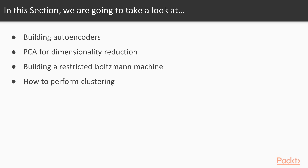We will use the Higgs boson dataset. In the second video we talk about PCA, or principal component analysis, a well-known technique for dimensionality reduction, implemented using TensorFlow. In the third video we talk about restricted Boltzmann machines, used to represent images using less information. In the fourth and final video we will talk about clustering, and in particular k-means clustering using TensorFlow.